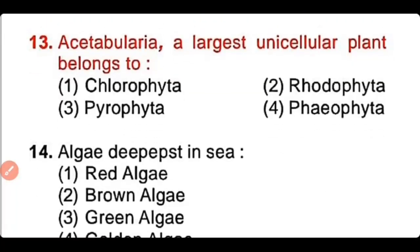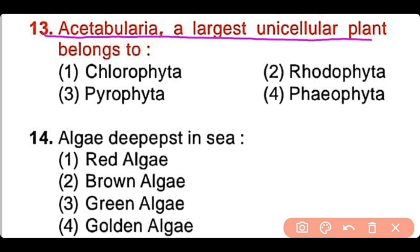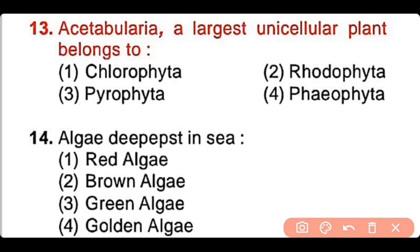Question number 13: Acetabularia, which is the largest unicellular plant, belongs to chlorophyta, rhodophyta, pyrrophyta, or phaeophyta? The correct answer is option 1. Chlorophyta contains acetabularia, which is the largest unicellular plant.